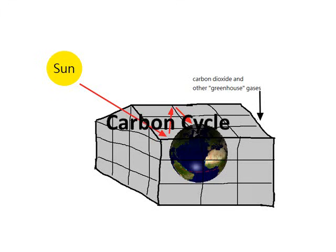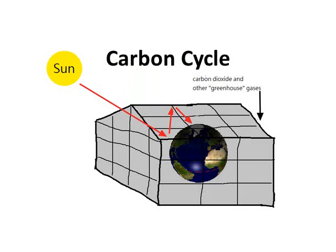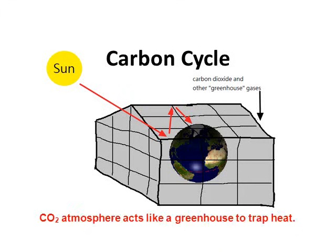In this quick video we're going to go over the basics of the carbon cycle. The picture shows the greenhouse effect. Please do not think that there is an actual glass building surrounding planet Earth — that's just silly. The picture is implying that our atmosphere acts like a greenhouse. Our atmosphere is made up of a lot of carbon dioxide, and carbon dioxide acts like a greenhouse to trap heat. Let's go ahead and get started with the carbon cycle.